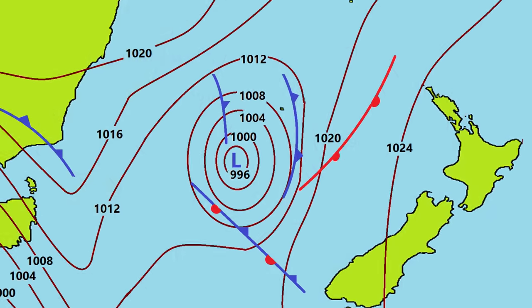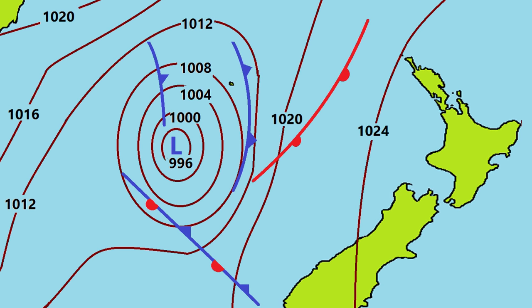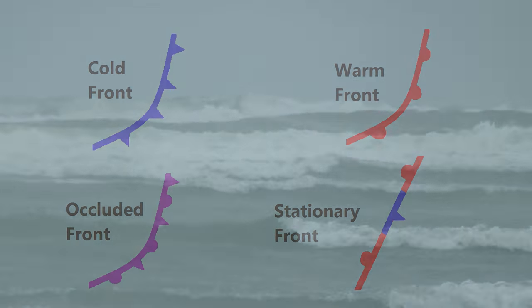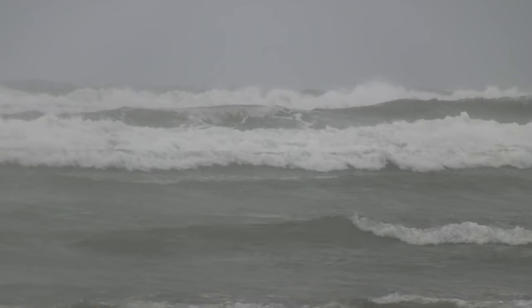One of the main symbols employed on a weather map is called the front. A front represents the boundary between two air masses and appears on the weather map as a line with triangles or semicircles attached. At the front of two air masses there is stormy weather.